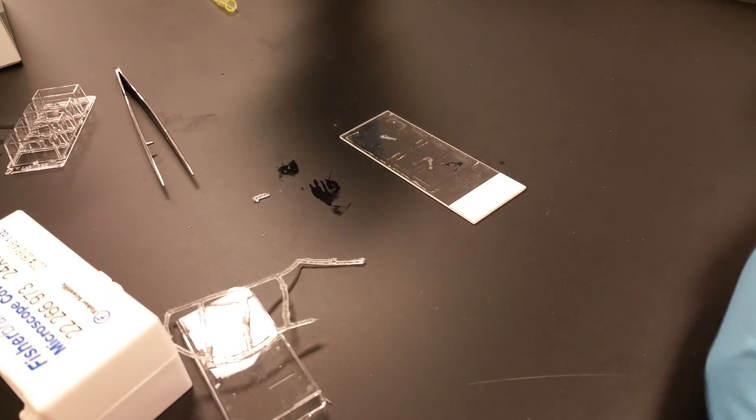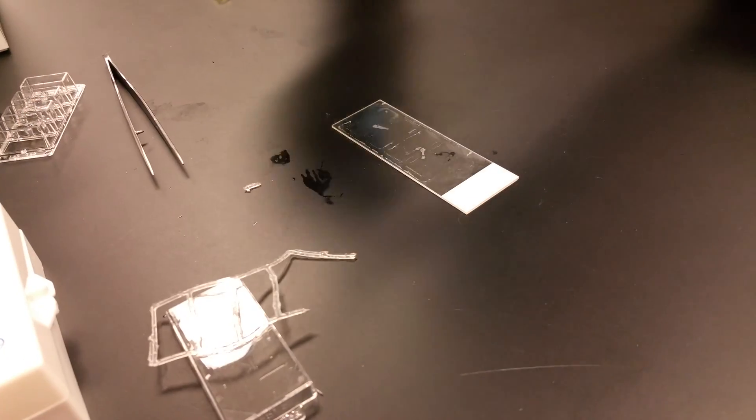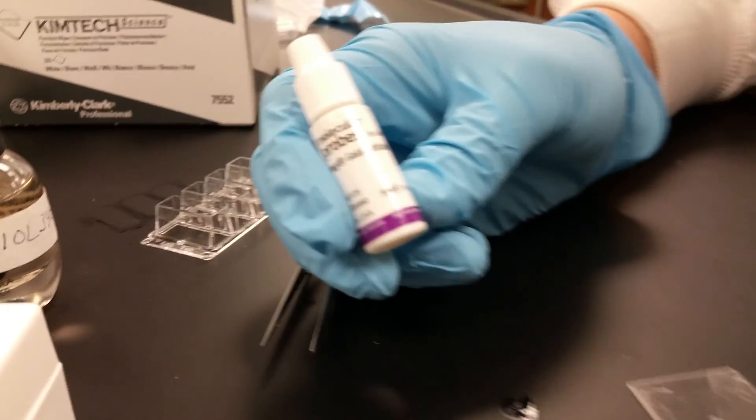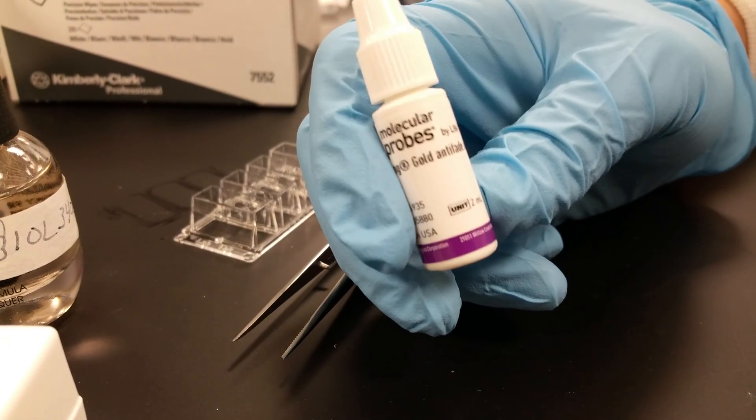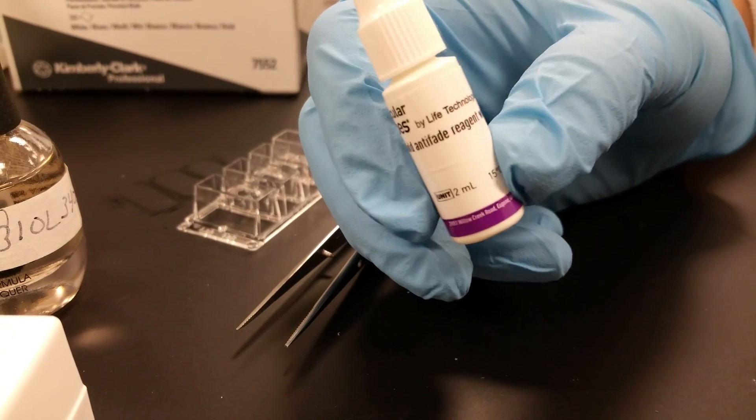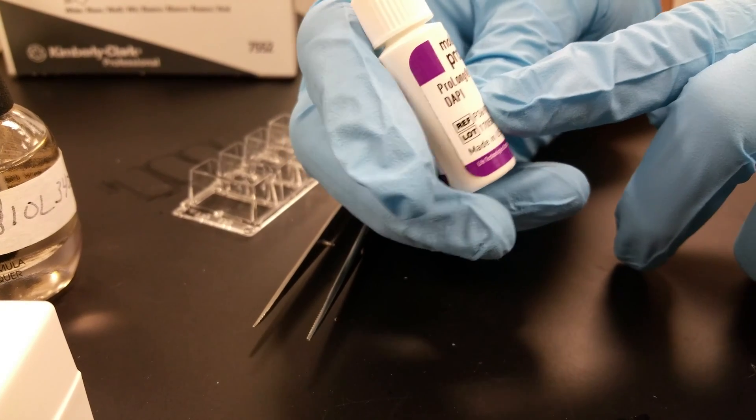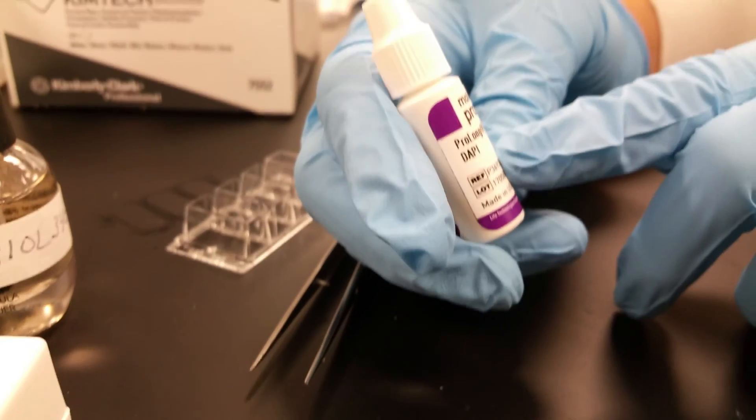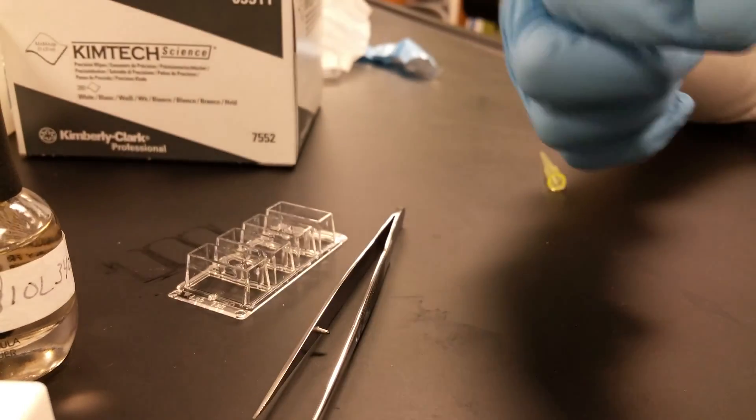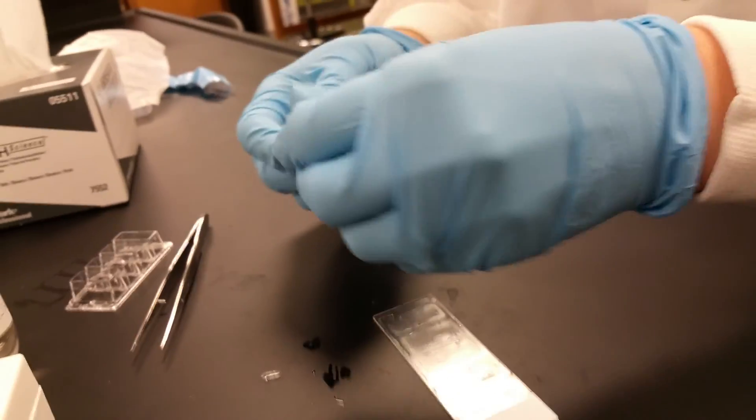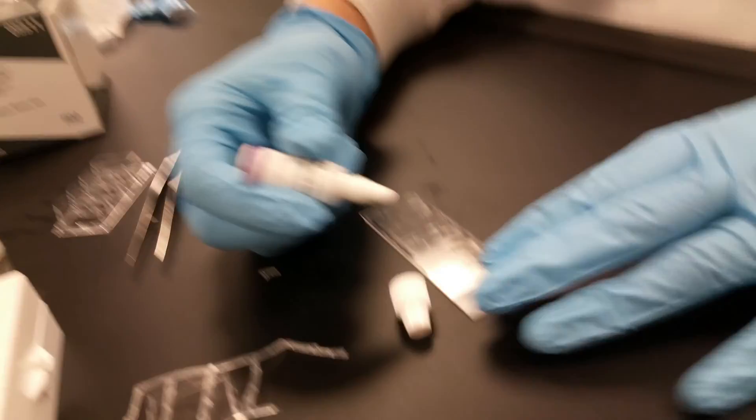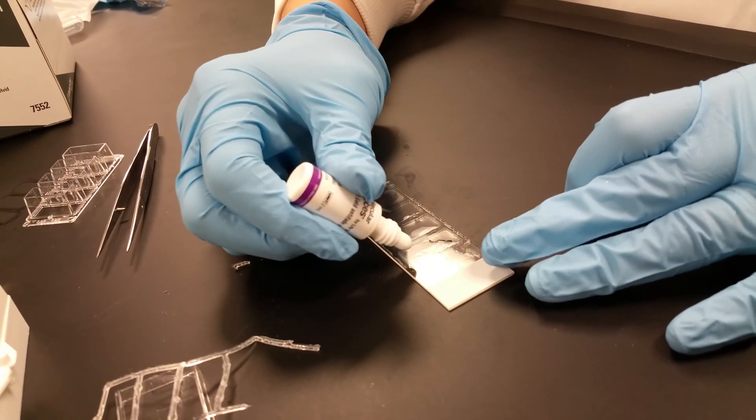Now we're going to add our mounting medium. This has a reagent in it that's going to keep your fluorophores from quenching as easily, and it also has our last stain, DAPI, which is blue and it's going to bind to the minor groove of DNA. This is going to help us see the chromosomes. This comes out as a dropper, so you want to do one drop per well.